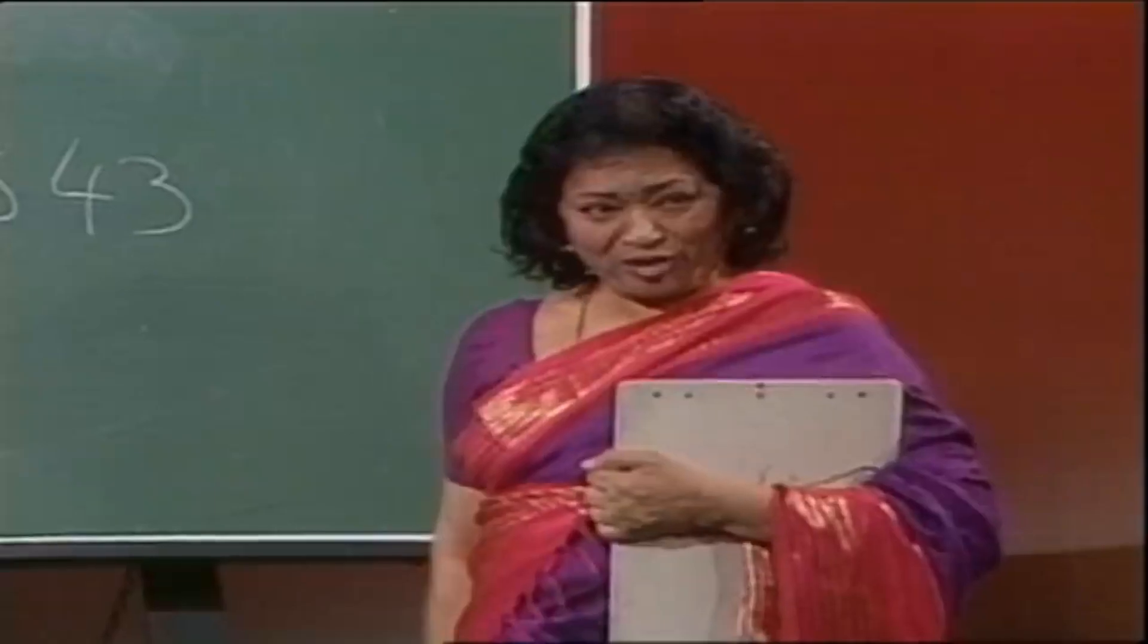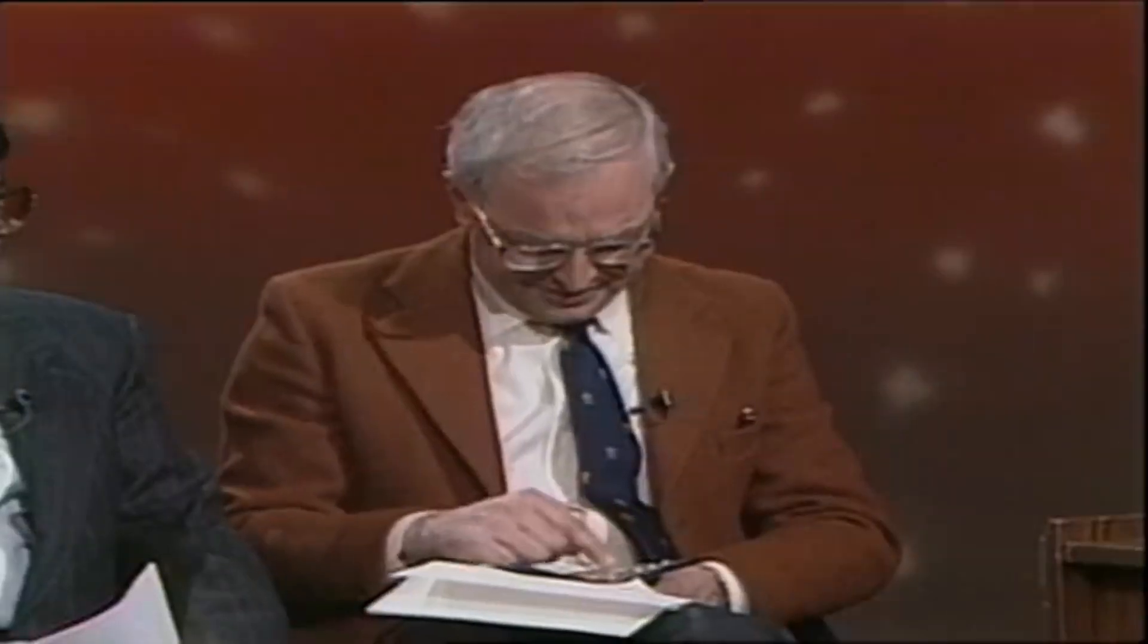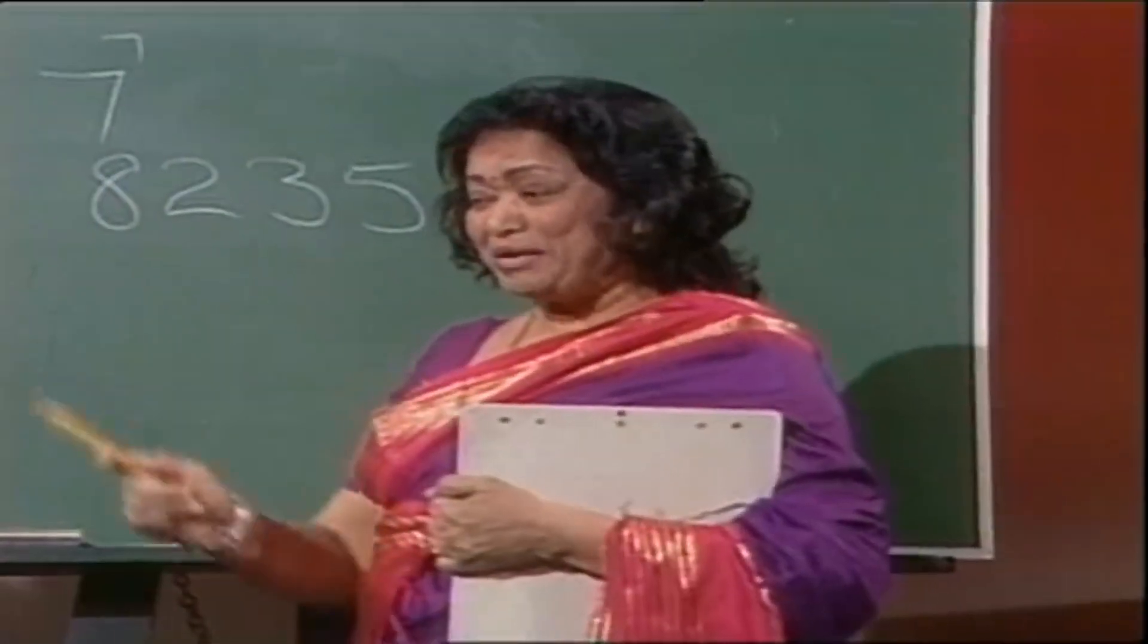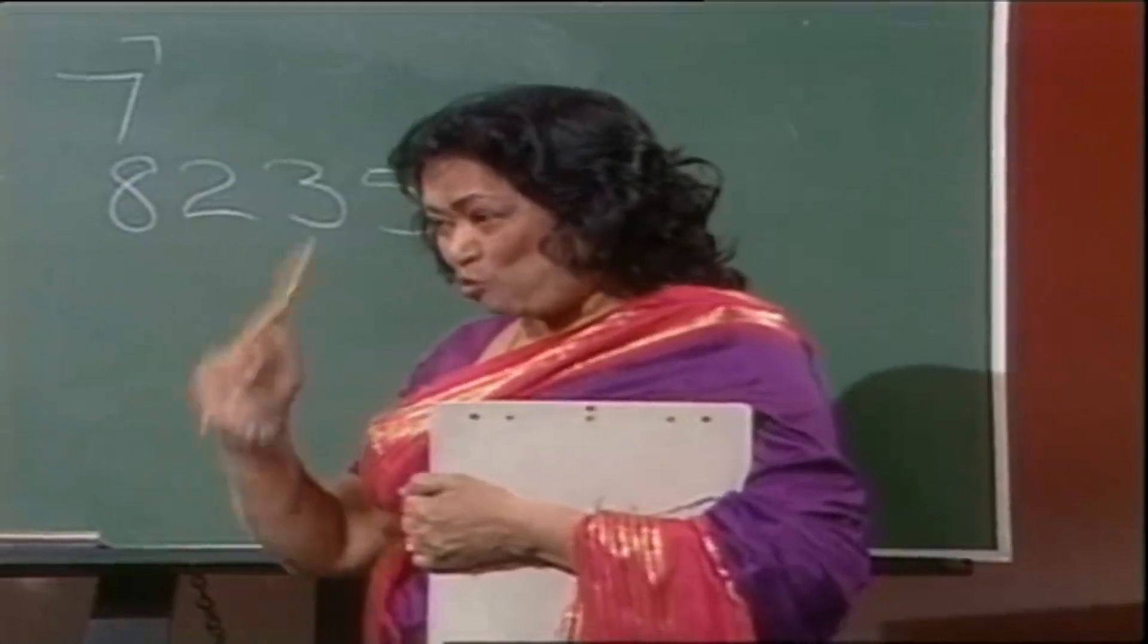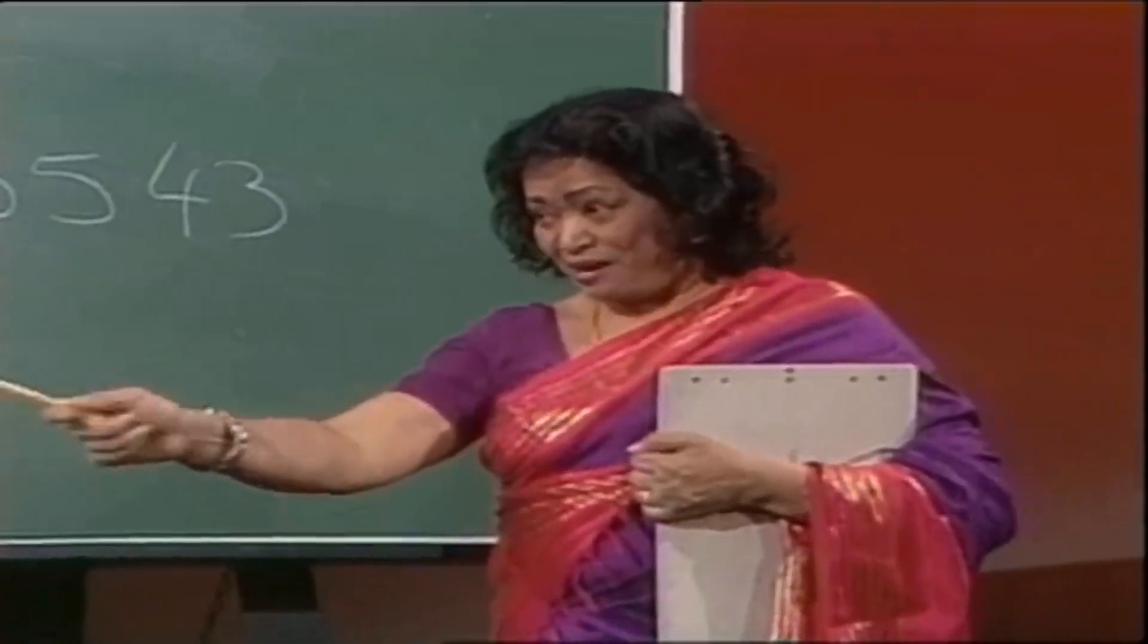7 multiplied by 7 is equal to 49. 49 multiplied by 7 is equal to 343. 343 multiplied by 7 is equal to 2,401. 2,401 multiplied by 49 is equal to 117,649. 117,649 multiplied by 7 is equal to 823,543.